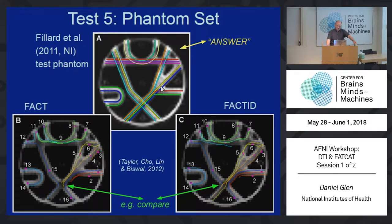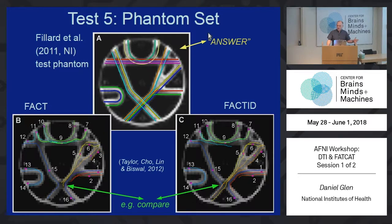This is a phantom that Billard developed in 2011 to test various algorithms. We tried it on this one and it does a fairly decent job. This phantom uses a gel in tubes so they know what the right answer is. How close to that right answer can you get? We still can't go through where fibers are crossing or kissing because we can't tell the difference whether they turn around or go through. We do a better job than FACT, but it's not perfect.